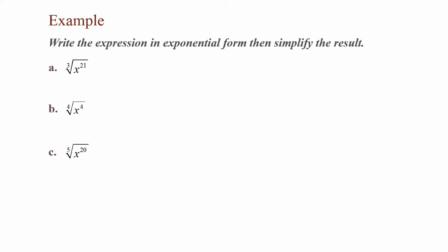In this example, we want to write the expression in exponential form, then simplify the result. Part A, we have the cube root of x to the twenty-first power. Writing this in exponential form is going to equal x to the twenty-first divided by our root, so I have x to the power of twenty-one divided by three. Twenty-one divided by three is seven, so this reduces to x to the seventh power.